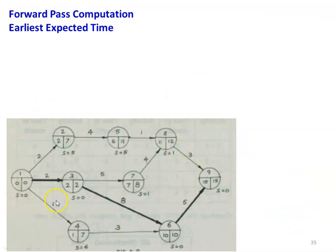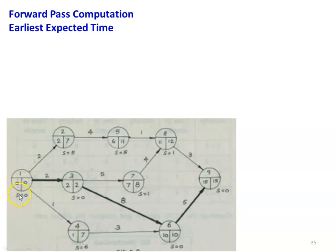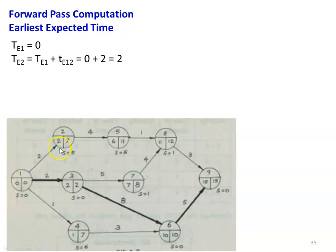Now the network is drawn with all the values. We will see how the TE and TL values and slack values are calculated. For the forward pass computation, we calculate the earliest expected time. In the event node, we divide into three parts: the top is the event number, the bottom-left is the earliest expected time TE value, and the bottom-right is the latest allowable occurrence time. TE1 equals 0; the first event is assigned time 0. Then TE2: there is only one incoming arrow, so TE2 equals TE1 plus t(1,2) equals 0 plus 2 equals 2. Then TE3: again only one incoming arrow, so TE3 equals TE1 plus t(1,3) equals 0 plus 2 equals 2.